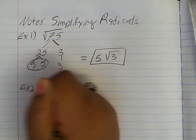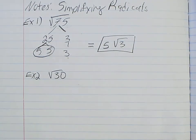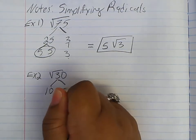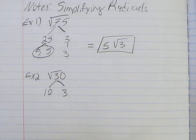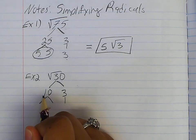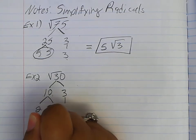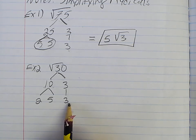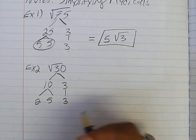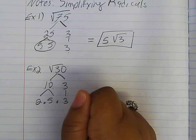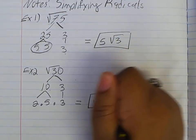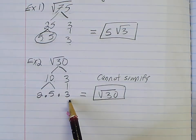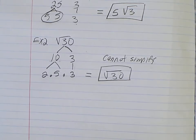For example 2, we have the square root of 30. I break it down — 10 times 3 gives me 30. Then 10 breaks down to 2 and 5, and I bring down the 3. Now I look to see if anything repeats — it does not. There are no repeats, so I cannot circle anything. I multiply them back together and the answer stays as square root of 30. This cannot simplify. When something cannot simplify, you multiply everything back together and put it in the radical.